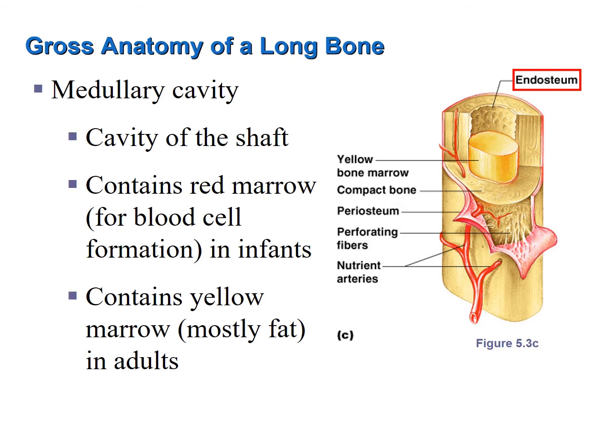As the infant or child ages, much of that red bone marrow in the medullary cavities of long bones is converted to yellow bone marrow, which consists mainly of fat. In an adult, only the proximal epiphyses of the femurs and the humeri contain red bone marrow. Most hematopoiesis in an adult occurs in the flat bones.